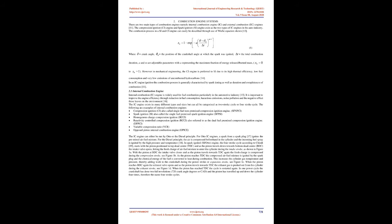Section 2: Combustion Engine Systems. There are two main types of combustion engines — internal combustion (IC) and external combustion (EC) engines. The compression ignition (CI) engine and spark ignition (SI) engine exist as the two types of IC engines in the auto industry. The combustion process in SI and CI engines can easily be described through the use of the Webb equation. The CI engine is preferred to SI due to its high thermal efficiency, low fuel consumption, and very low emissions of uncombusted hydrocarbons.